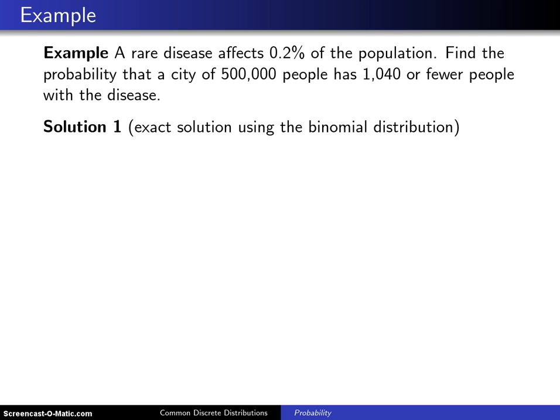A rare disease affects 0.2% of the population. Find the probability that a city of 500,000 people has 1,040 or fewer people with that particular disease. In this case, the random variable X is going to denote the number of people in the city that are infected with the disease.